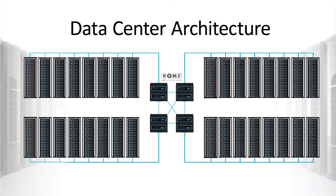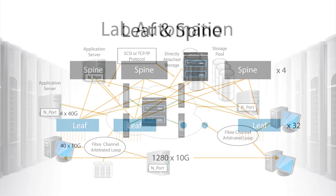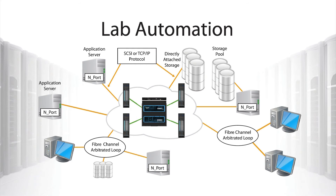Roam can be used in a variety of applications. In the data center, it can be part of the backbone architecture to provide full layer zero automation across the entire data center. In the leaf and spine architecture, Roam can be part of the spine to offer on-demand optical circuits between the leaf nodes for low-loss and longer life connection. In lab automation, Roam can provide all the tracking and switching of connections, reducing the cost and time of manual connection and maintenance.